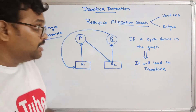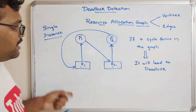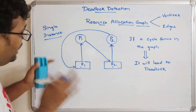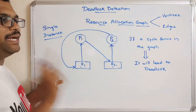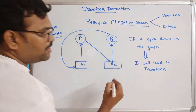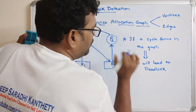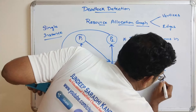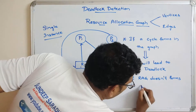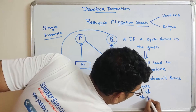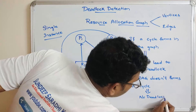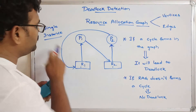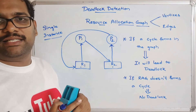So, two points to remember. If the resource allocation graph is drawn for resources where each resource has only a single instance, and if the RAG forms any cycle, that implies it will definitely lead to deadlock. If the resource allocation graph does not form a cycle, there is no deadlock — 100%. This rule is only applicable for resources with a single instance.